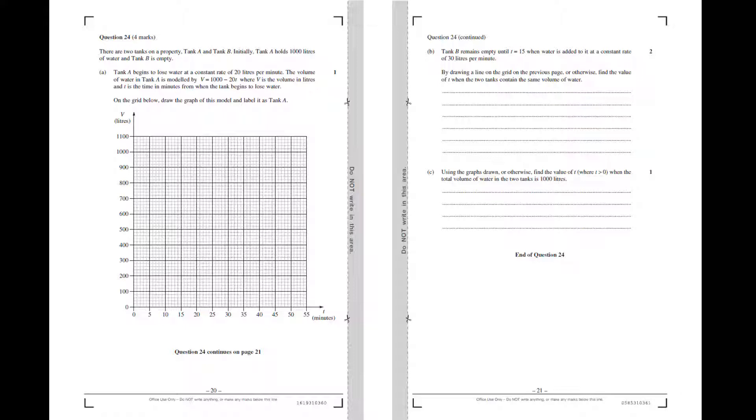Over the page, part B says tank B remains empty until T = 15, and then water is added at a constant rate of 30 liters per minute. By drawing a line on the grid or otherwise, find the value of T when the two tanks contain the same volume of water. Finally, part C says using the graph drawn or otherwise, find the value of T where T > 0 when the total volume of water in the two tanks is 1000 liters. So there it is, a three-part question.